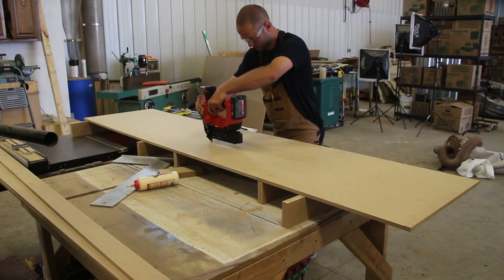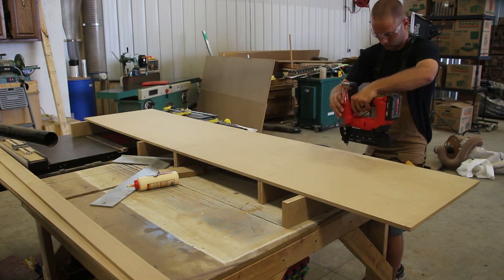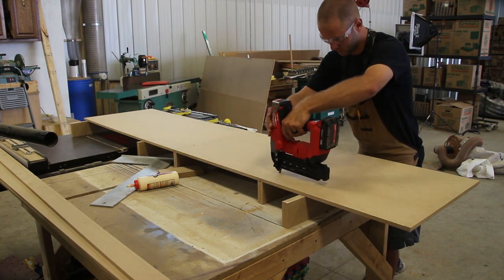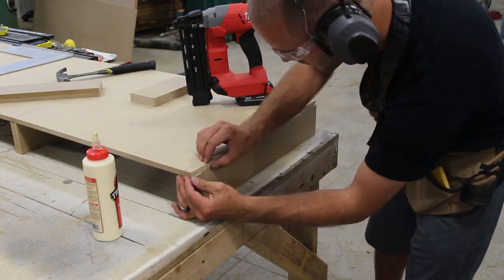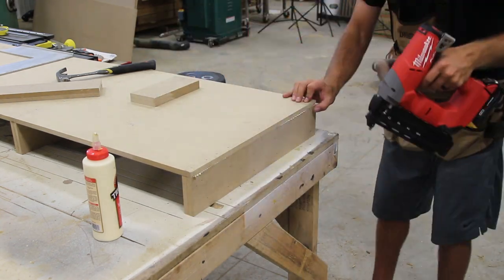I apply glue to the vertical supports and align them to the layout lines we just made. I then use brads to temporarily secure it in place. I will then go back and put three pan head screws in each support to give it a little extra support.